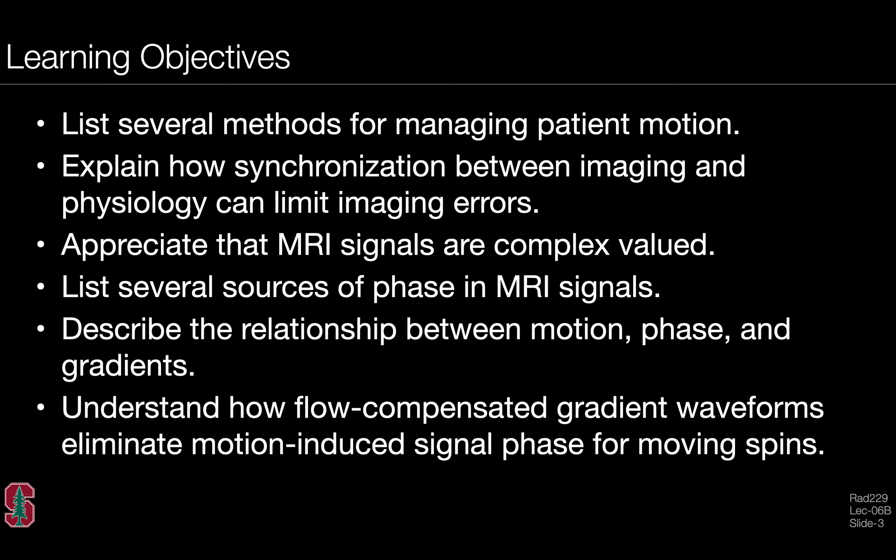The learning objectives for this lecture include being able to list several methods for managing patient motion, explain how synchronization between imaging and physiology can limit imaging errors, appreciate that MRI signals are complex-valued, list several sources of phase in complex MR signals, describe the relationship between motion, phase, and gradients, and finally to understand how flow-compensated gradient waveforms limit motion-induced signal phase from moving spins.